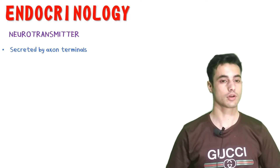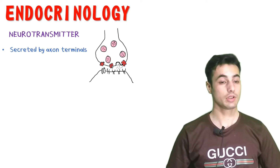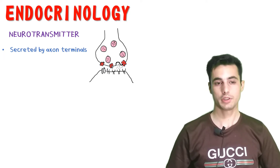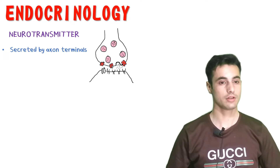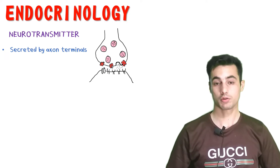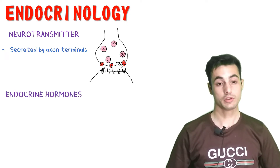Neurotransmitters are secreted by the axon terminal. We have the pre-synaptic membrane and the post-synaptic membrane. When the vesicles — shown in pink — fuse with the pre-synaptic membrane, the neurotransmitters are released into the space between the pre- and post-synaptic membrane. These neurotransmitters open or close the channels which are on the post-synaptic membrane.